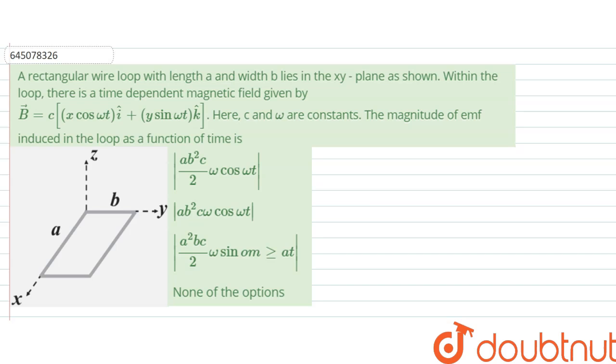Hello, we are given a question and the question says, a rectangular wire loop with length a and width b lies in xy-plane as shown.